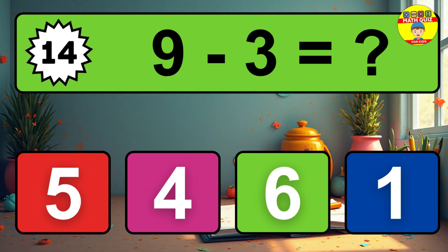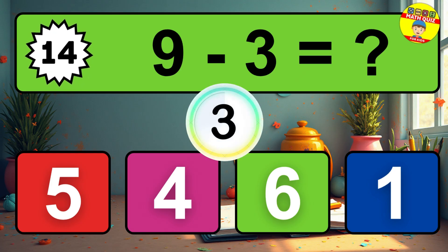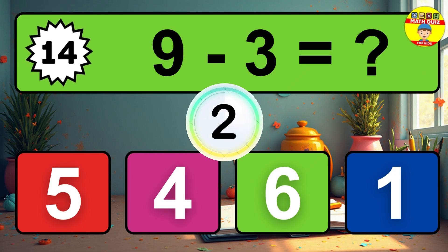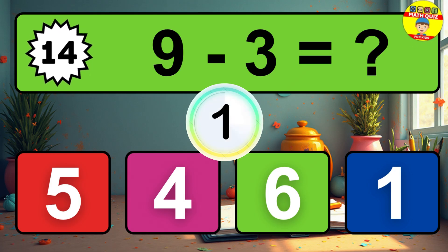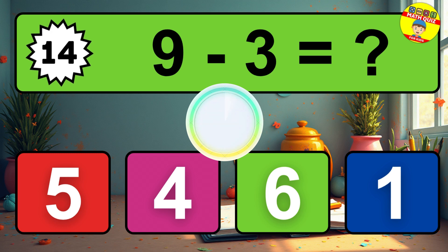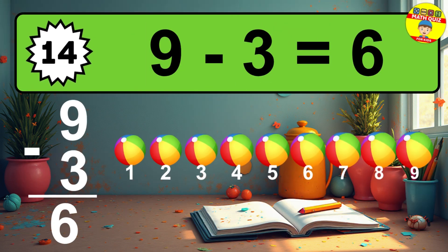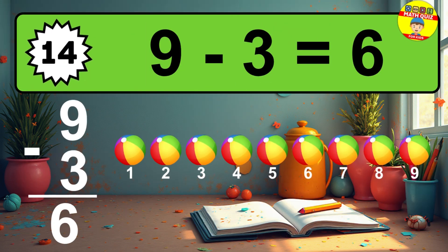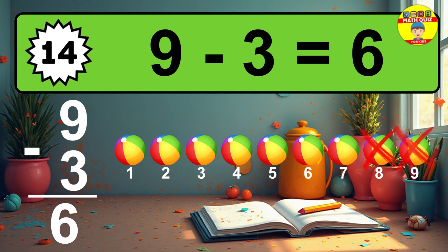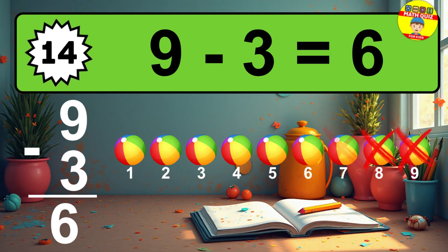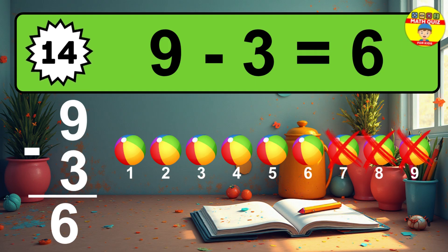Question 14. 9 minus 3 equals what? So the answer is 9 minus 3 is 6. Let's count it. 1, 2, 3, 4, 5, 6.